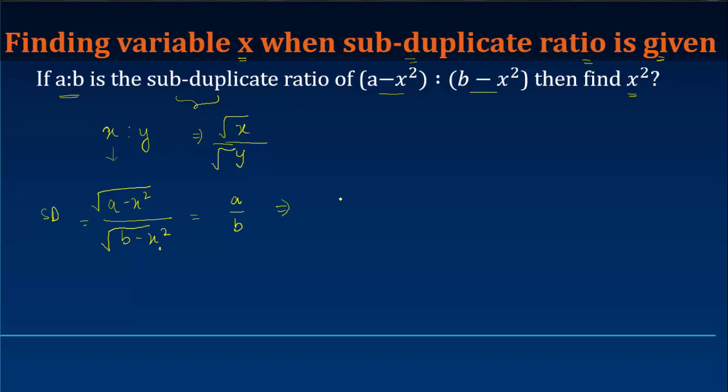we get b times square root of (a minus x²) is equal to a times square root of (b minus x²).